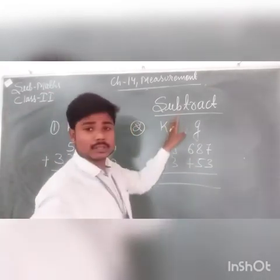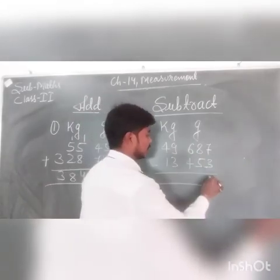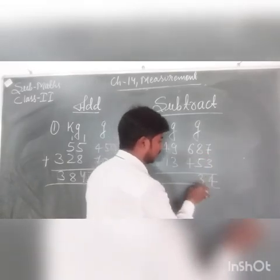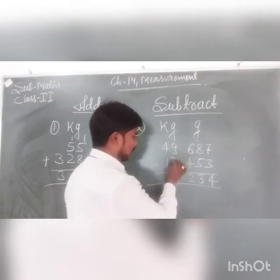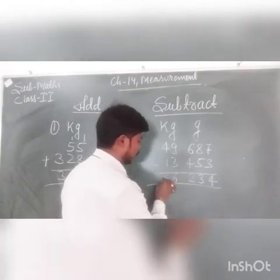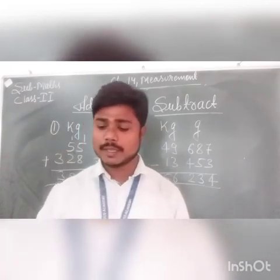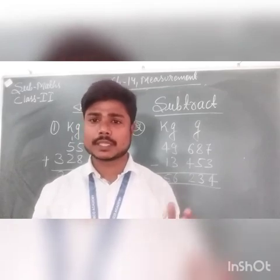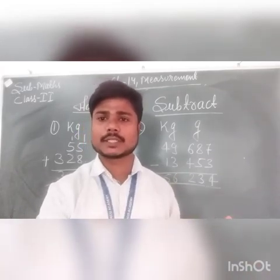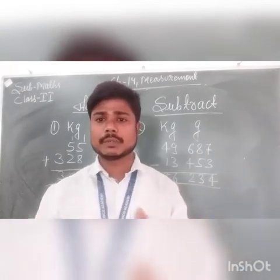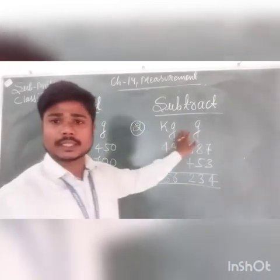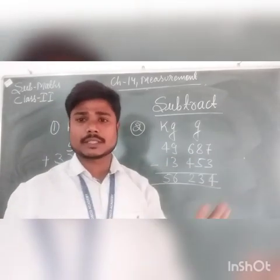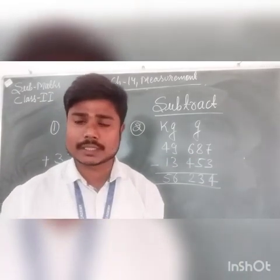Now let's subtract it. This is based on subtraction: 7 minus 3 is 4. 8 minus 5 is 3. 6 minus 4 is 2. 9 minus 3 is 6. 4 minus 1 is 5. In this way we can also solve addition as well as subtraction based on measurement of weight. It is just similar to measurement of length — there we use meters and centimeters, and here we use kg and grams. The main difference is that weight is measured in kg and grams, while length is measured in meters, centimeters, and kilometers.